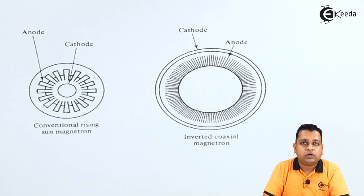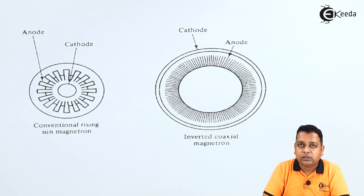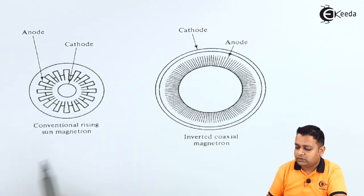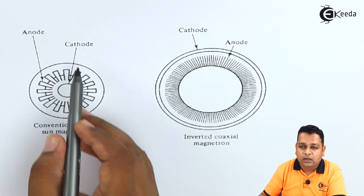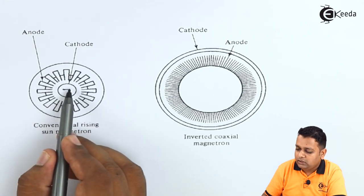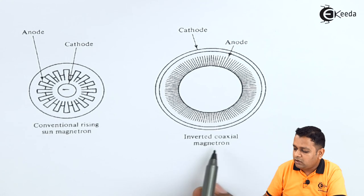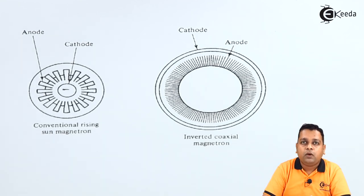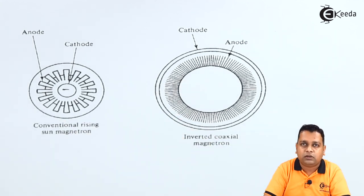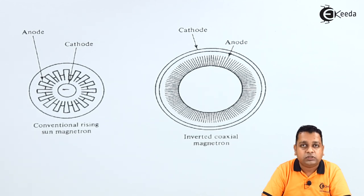After deriving Hull's cutoff potential and cutoff magnetic flux density for the inverted coaxial magnetron, we make a simple comparison with the conventional coaxial magnetron. In the conventional rising sun magnetron, the anode is the outer cylinder and cathode is the inner cylinder, whereas in the inverted coaxial magnetron the positions are swapped. The advantage of making the cathode the outer cylinder is that the cathode current density can be reduced to one tenth, which practically makes a higher device lifetime possible.